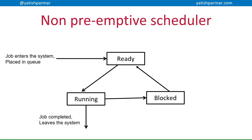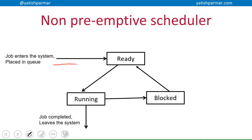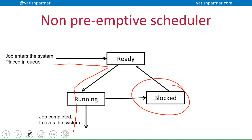A non-preemptive scheduler does not have the ability to move jobs out of the running state into the ready queue to allow something else to be processed. Once a job enters the system, it goes from the ready state into the running state and then leaves the system once it has finished executing. The only time a task goes into the blocked state is if a peripheral or data is not available, which allows something else to come in. Once a job enters the CPU, it is usually run to completion and nothing else can come in during that time.